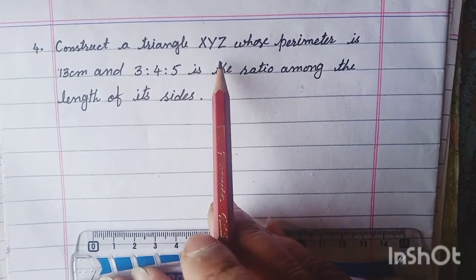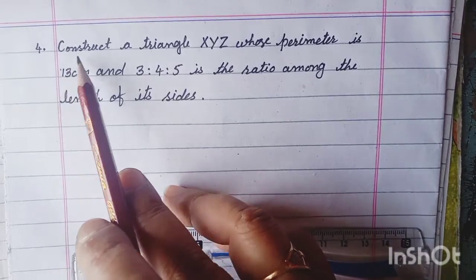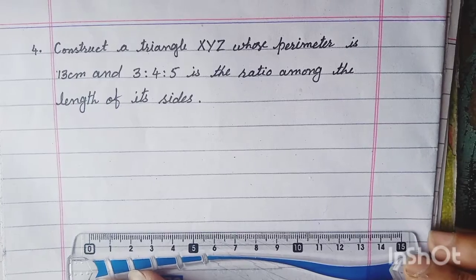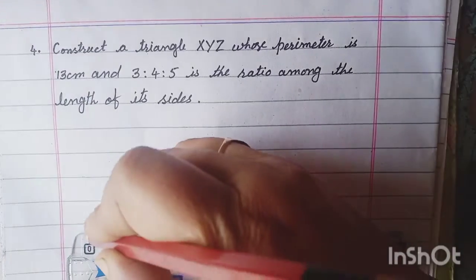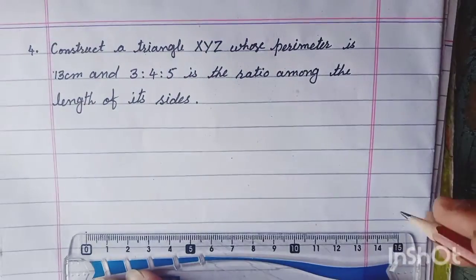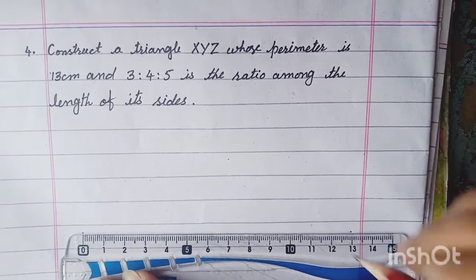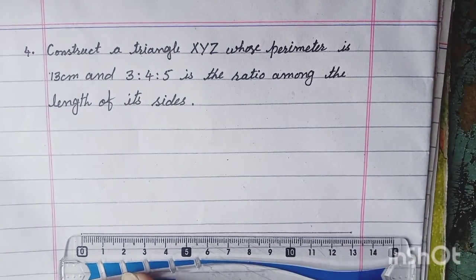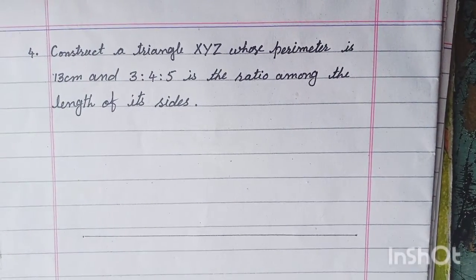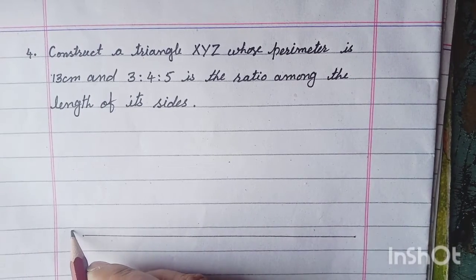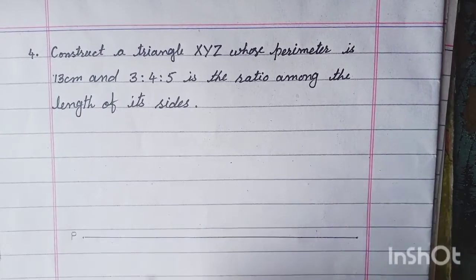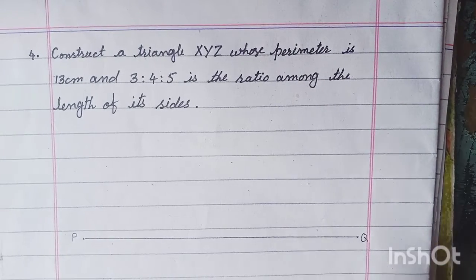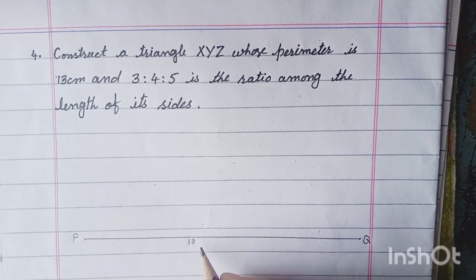Perimeter ہمارے پاس given ہے, جیسے ہم نے Question No. 3 کیا, same as it is. اس میں ہمارے پاس perimeter 13 ہے, اس میں 10 تھا. اب سب سے پہلے ہم 13 کا perimeter لیں گے — 0.0 سے start کریں گے اور 13 تک جائیں گے. Mark کر کے line draw کر لیں گے اور اس کا نام P اور Q دیں گے. یہ ہمارے پاس 13 cm ہے.